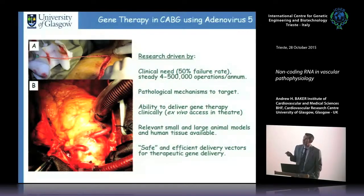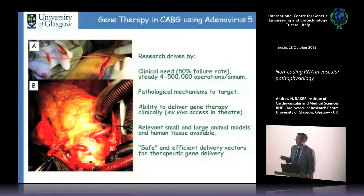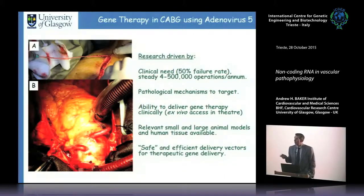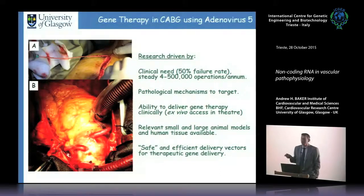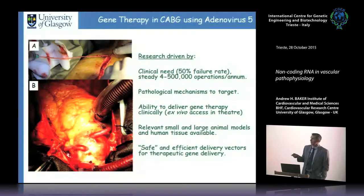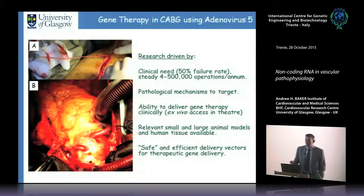This is a great approach for gene therapy because it's ex vivo — we can try to prevent neointima formation by overexpressing something in the saphenous vein before grafting, wash the tissue free of virus afterward, and we have great small and large animal models as well as a human ex vivo model. Mouse models don't really recapitulate the pathological mechanisms seen in larger animals or patients, though they're useful for knockout studies.